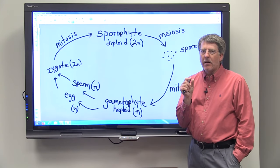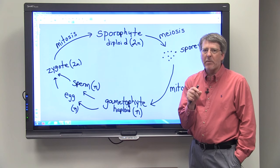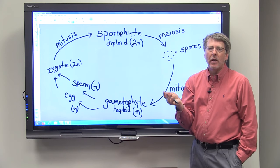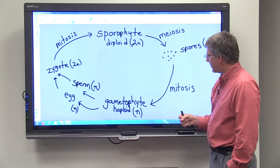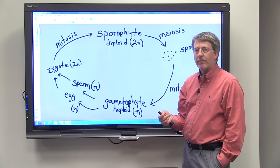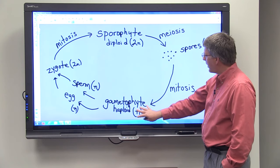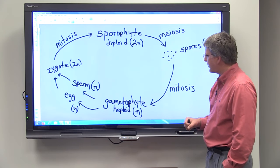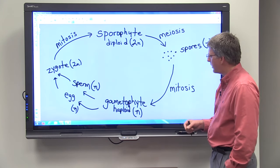Now in some plants, this gametophyte is going to be microscopic and you would never notice it most probably. In other plants such as mosses, the gametophyte generation may be dominant. But for most plants, the gametophyte generation is something that you're not going to be aware of.